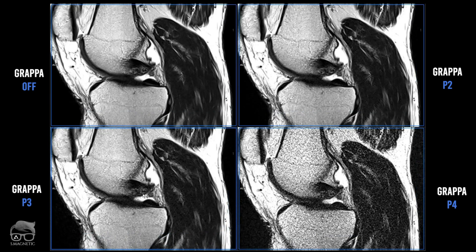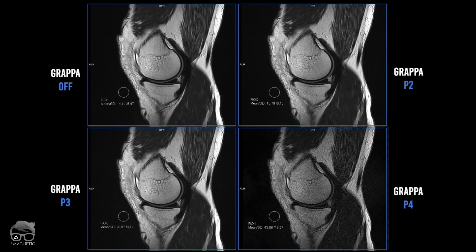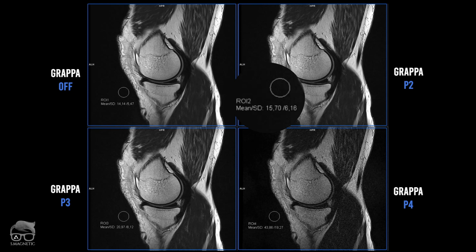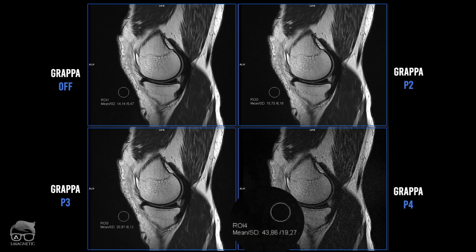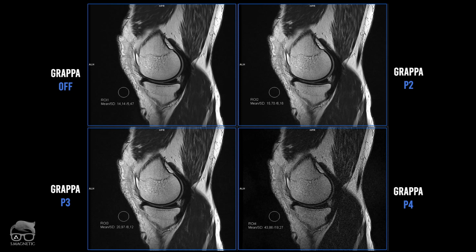Let's do some measurements. I placed a region of interest in the air to check the noise level. The mean for PAT OFF is 14, and PAT2 is 15.7 — not much difference. PAT3 is almost 21, and PAT4 is almost 44, which is clearly visible in the images. Keep in mind that parallel imaging works differently from scanner to scanner and coil to coil depending on your parameter settings. The main point is to understand your case, check image quality, and know how far you can push your parallel imaging.